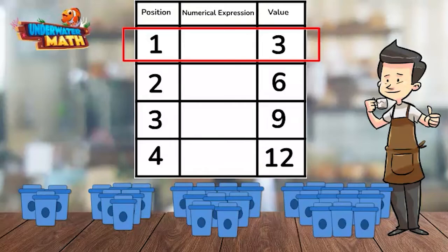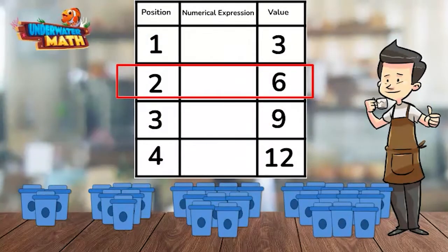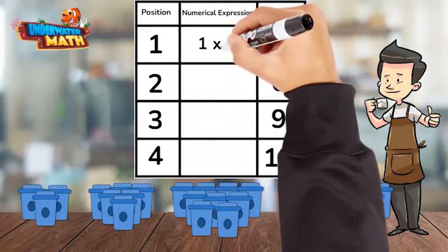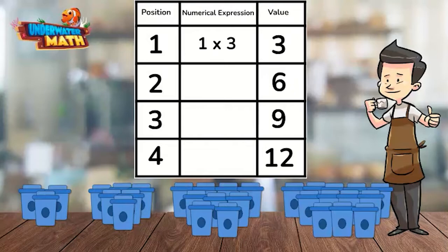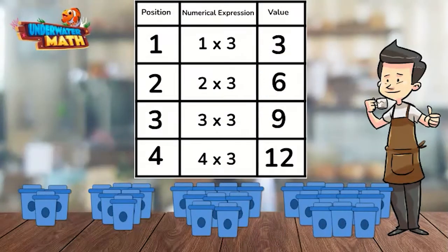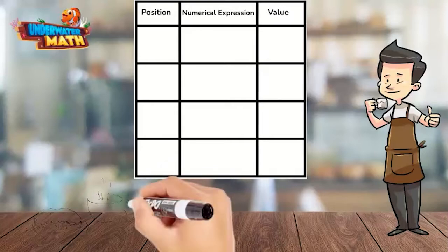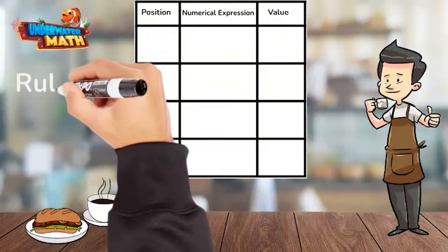If we add two, the rule will not work. In the second position, two plus two does not equal six. If we multiply by three, it works for each position. Multiply the position by three to get the value. Let's try another example. This time we know the rule and need to determine the value.